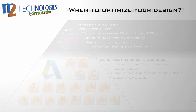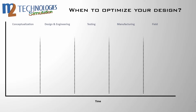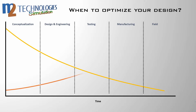So when is the best time to simulate and optimize your design? Over the product development life cycle, the ability to affect the functional capabilities of the design declines as the cost of making changes increases. The best time to identify failure modes is during the design and engineering phase, when the design is still flexible enough to make the necessary changes and the cost of those changes is minimized.